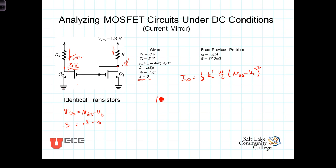So we can go ahead and calculate R2 then is equal to VDD, which is 1.8 volts, minus the voltage here, which is 0.3 volts, divided by the 72 microamps. And we do that calculation we get then that R2 is equal to 20.83 kiloohms.